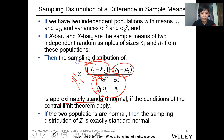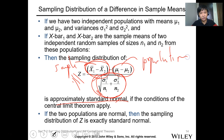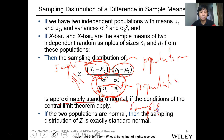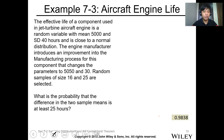So x-bar refers to the sample, mu refers to the population, and n refers to the number of samples. Now let's have this example. The effective life of a component used in jet turbine aircraft engines is a random variable with mean 5,000 and standard deviation of 40 hours, close to a normal distribution. The manufacturer introduced an improvement that changed the parameters to mean 5,050 and standard deviation 30. Random samples of size 16 and 25 are selected.